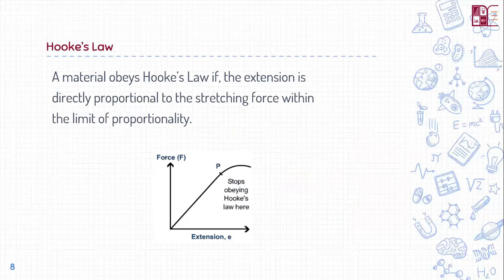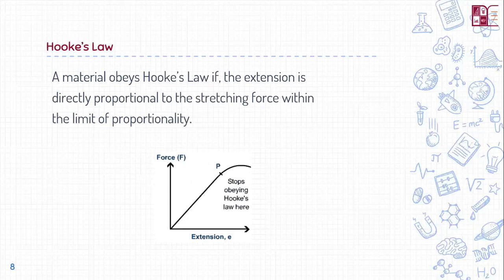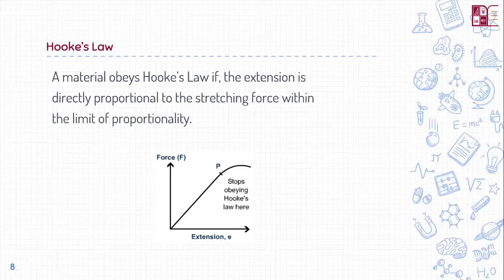A material obeys Hooke's Law if the extension is directly proportional to the stretching force within the limit of proportionality. Beyond that limit, when you apply more force there is a disproportionate change in extension — the material will stop obeying Hooke's Law. The spring constant will no longer apply beyond the point called the limit of proportionality.